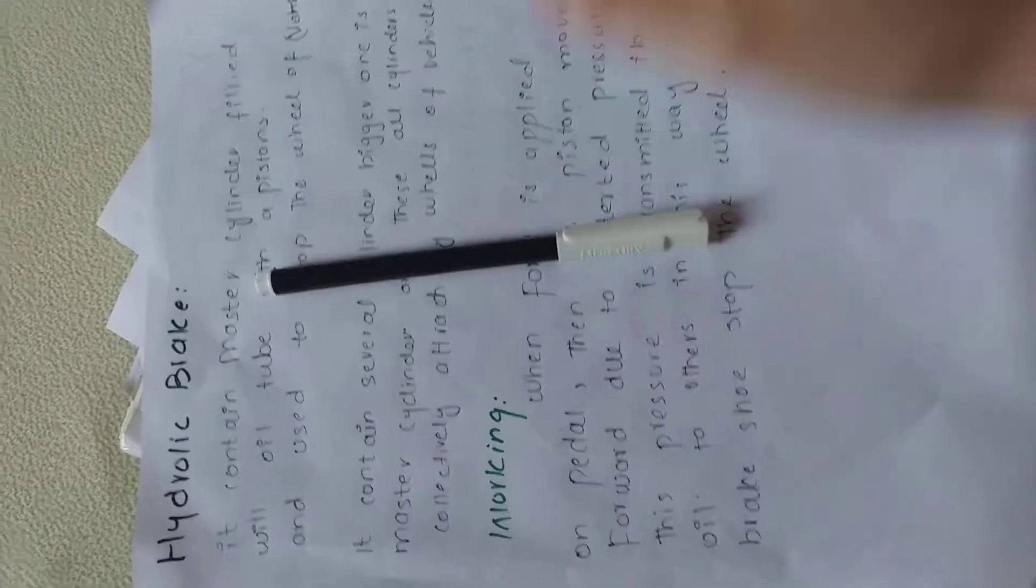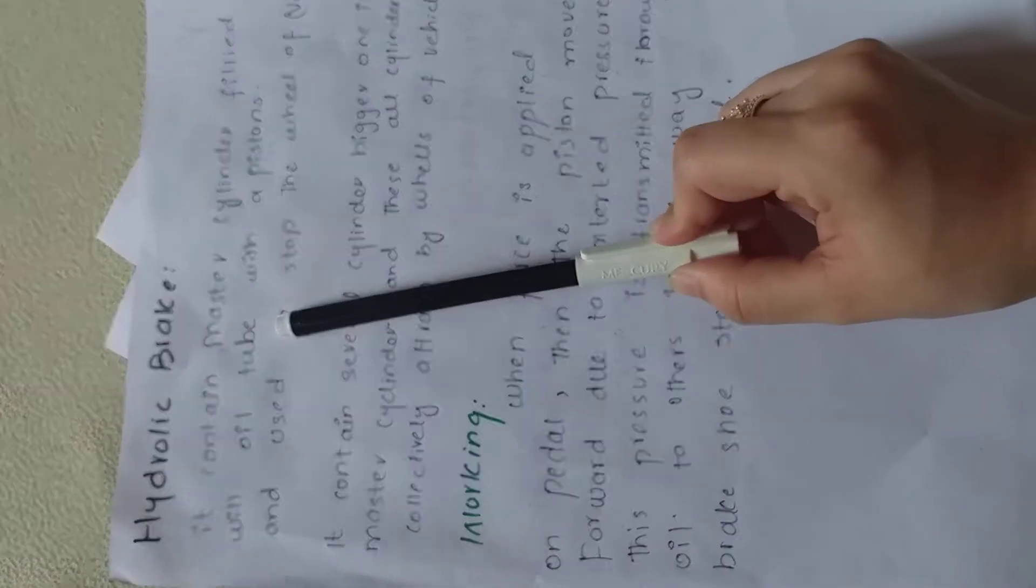The master cylinder is the main cylinder which serves the main purpose and does the main work. There are many cylinders. The master cylinder is connected with a small tube with a movable piston to the wheel. It contains a master cylinder filled with oil as I told you.